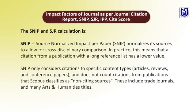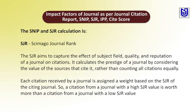These include trade journals and many arts and humanities titles. SJR — SCImago Journal Rank — aims to capture the effect of subject field, quality, and reputation of a journal on its citations. It calculates the prestige of a journal by considering the value of the sources that cite it, rather than counting all citations equally. Each citation received by a journal is assigned a weight based on the SJR of the citing source.